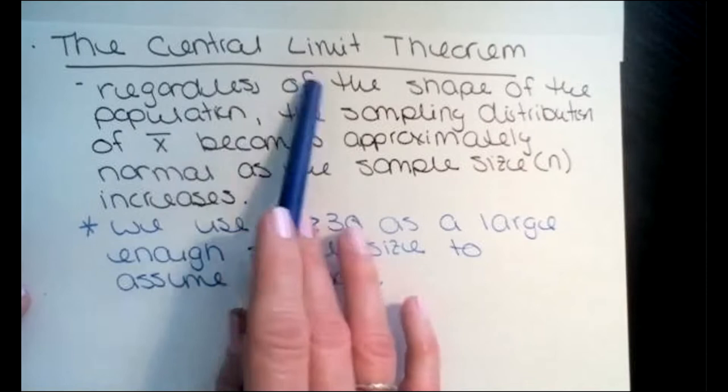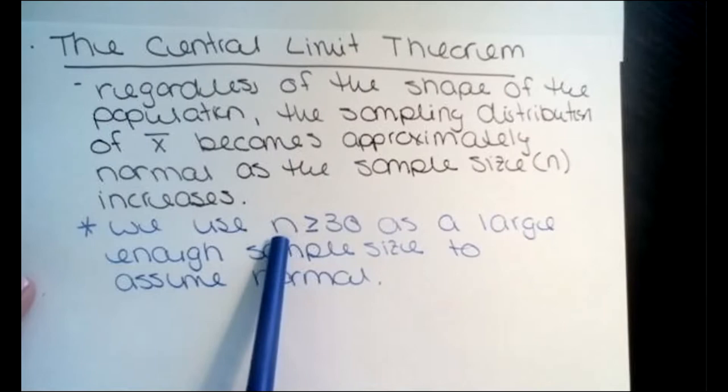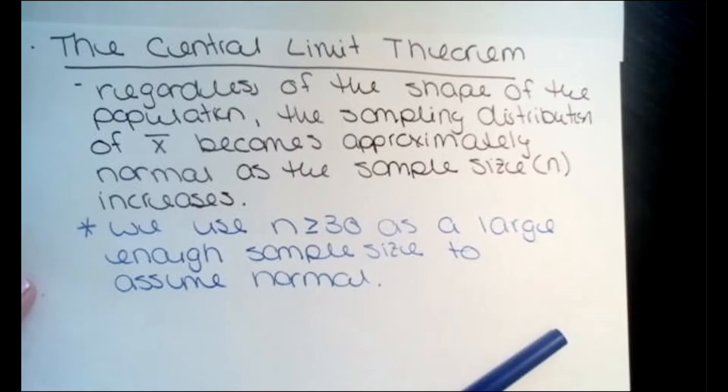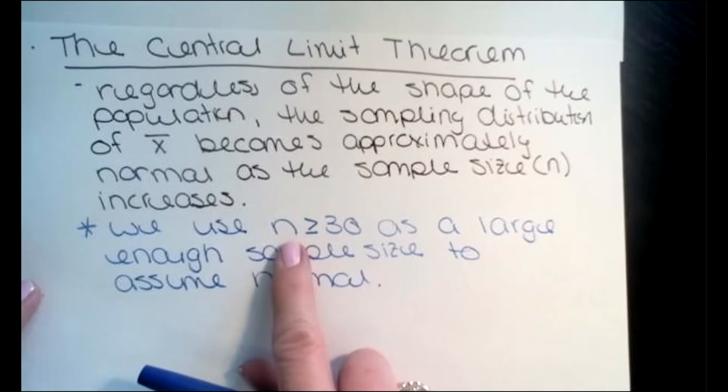That's the central limit theorem. All you need to check is n greater than or equal to 30. Now, if n is not greater than or equal to 30, that doesn't mean it's not normal — it just means I can't use this method to prove it. I have to use another way.